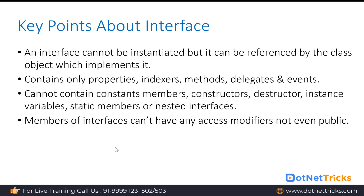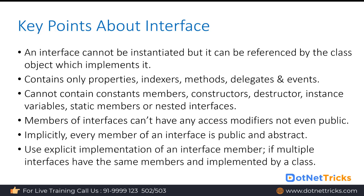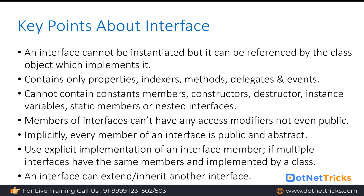Members of an interface cannot have any access modifier — not even public — because by default interface members are public and abstract. If you have more than one interface with the same method name and both are implemented in the same class, you should use explicit implementation so you know which interface method you are implementing. An interface can extend and inherit another interface — interface to interface is always inheritance, but interface to class is always implementation.